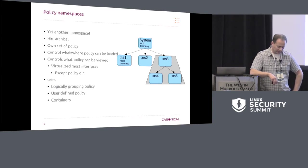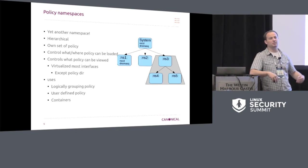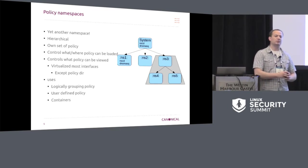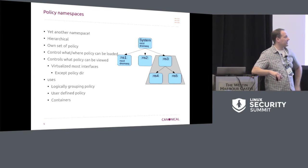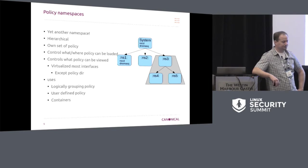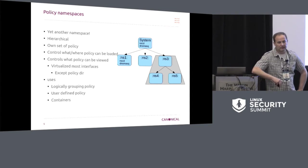AppArmor namespaces are hierarchical. Each namespace contains a separate set of policy — it's a way of grouping policy. They control what can be loaded, so if a task is in a namespace it might be able to load to it, but it can't load to other namespaces, especially up the tree. Anything in namespace 3 is not going to have any access to the system namespace. They also control visibility, so you can virtualize and hide things. If you're in namespace 3, it can see its children — namespaces 4 and 5 — but it can't see the system, namespace 2, or namespace 1.